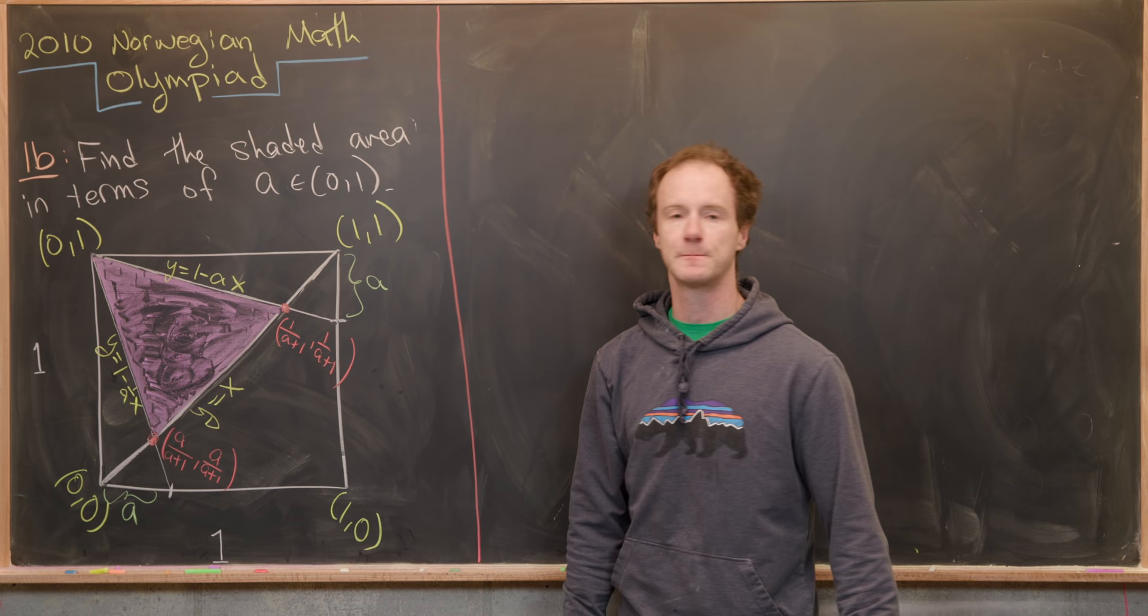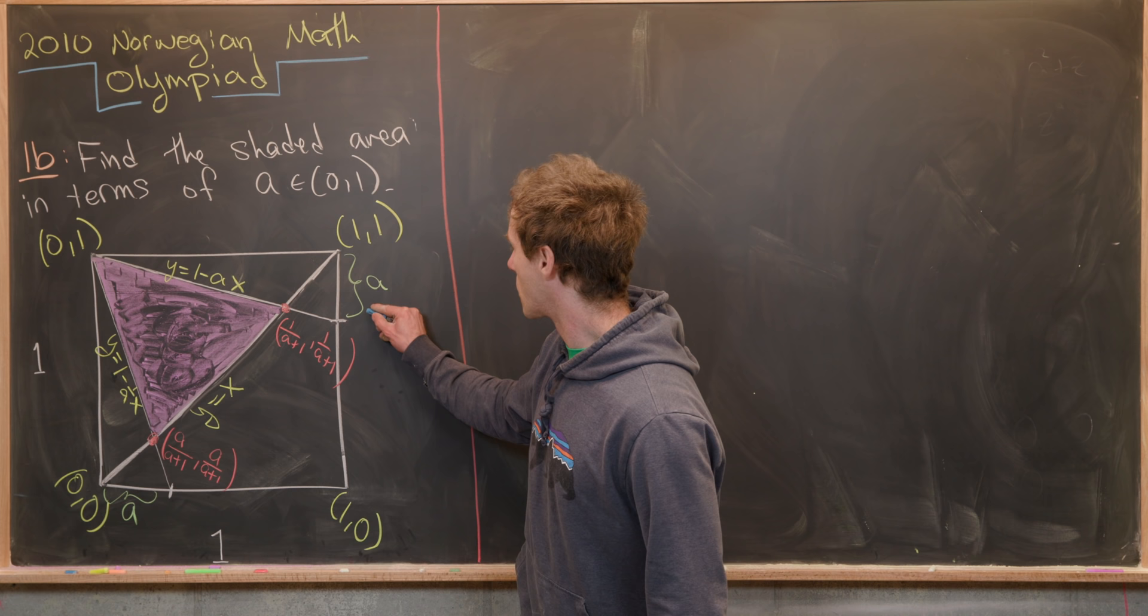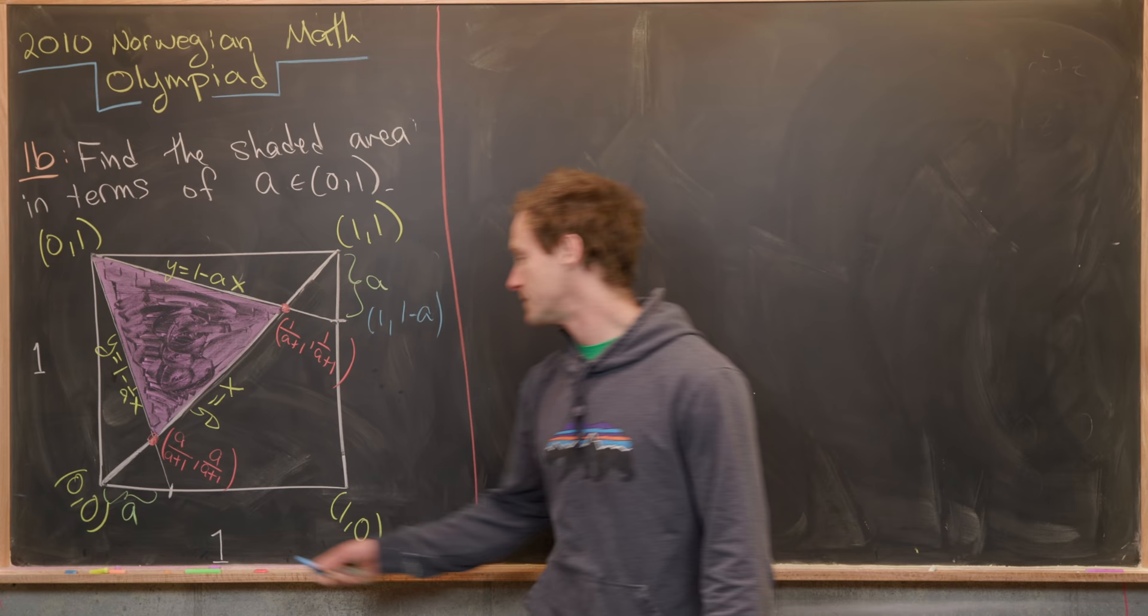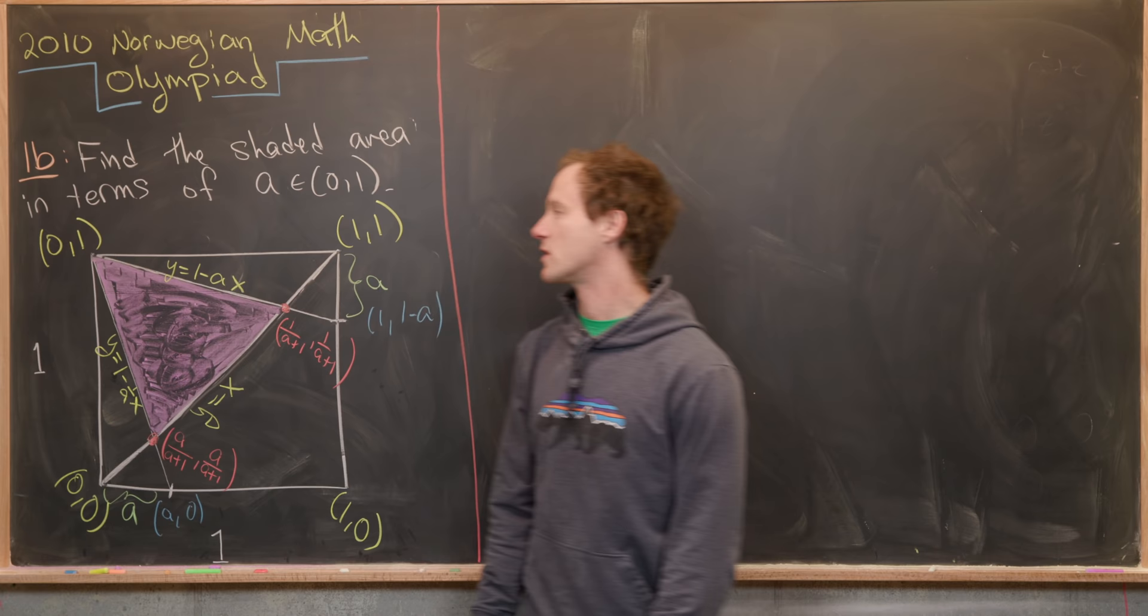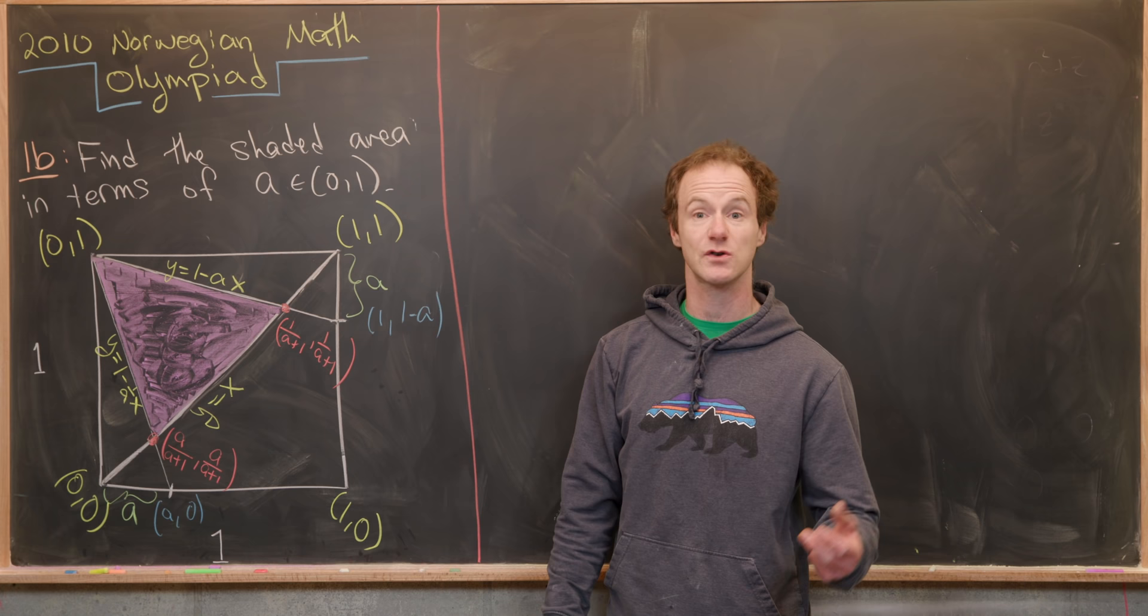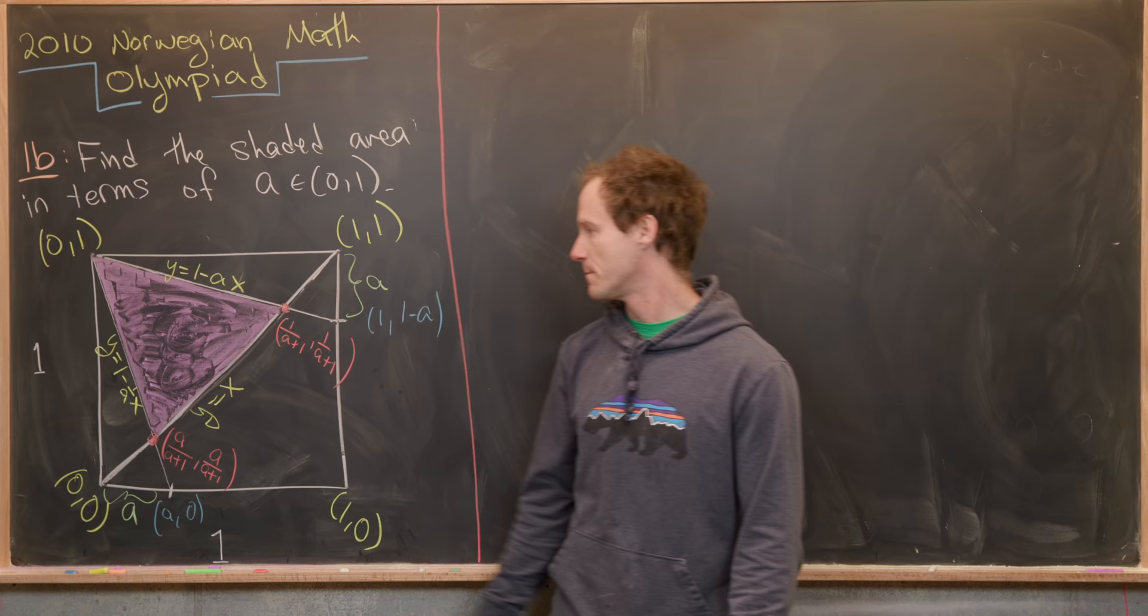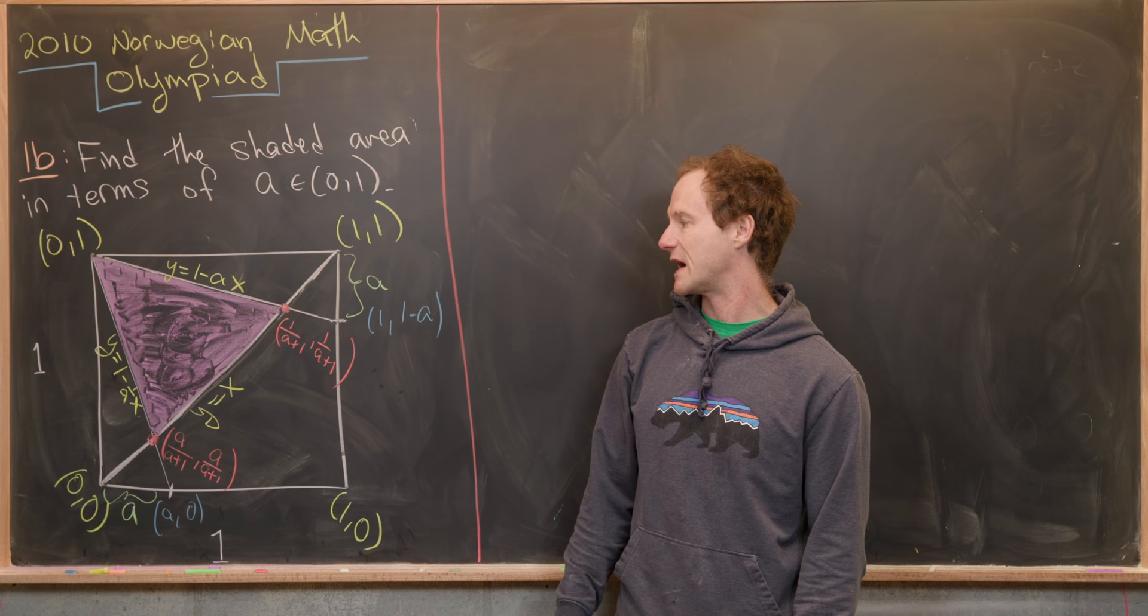So let's see. That makes this coordinate right here the coordinate 1, 1 minus A. So that's pretty easy to see. That makes this coordinate right here A, 0. Then we can use those along with this fact that we have a point up here of 0, 1 to find the equation of this line up here, which is 1 minus A, X, or Y equals 1 minus A, X. That's not too hard to do with just the point slope form. And then here we can find the equation of this line is Y equals 1 minus 1 over A times X, or maybe 1 minus X over A.